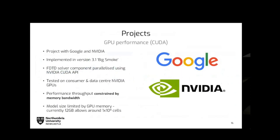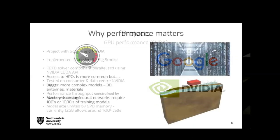One of the key ways GPR Max is developed is through funded projects. A more recent one was with Google, focused around using GPR for finding fiber optic cables. As part of that project, because Google were interested in using GPR Max models with machine learning, the first thing they wanted to do was speed up the code. Although it had already been parallelized for CPU, they wanted to put it on GPU because FDTD is quite an attractive algorithm to parallelize. Google were happy for us to create a CUDA version and contribute it to our open source code base.